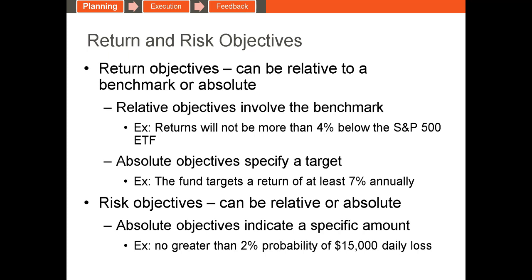Let's go deeper on the risk and return objectives. Return objectives can be either relative to a benchmark or absolute. A relative return objective might be something like 'the return will be greater than that of the S&P 500 over the same period.' An absolute return objective would list a specific target return like 10% over the next year. The risk objective identifies the amount of risk the fund will be exposed to — measured using standard deviation, VAR, or some other metric. Many funds will specify a qualitative level of risk, like a moderate or low level.